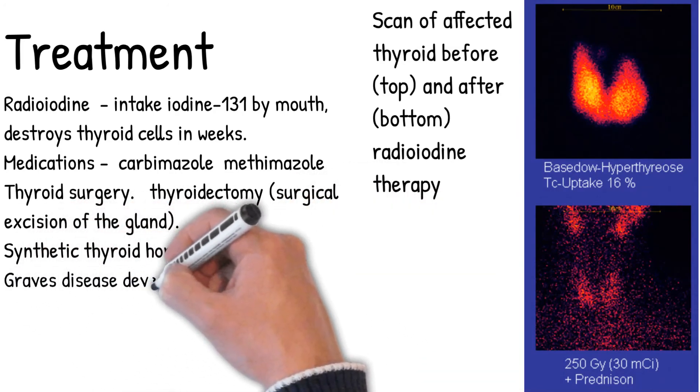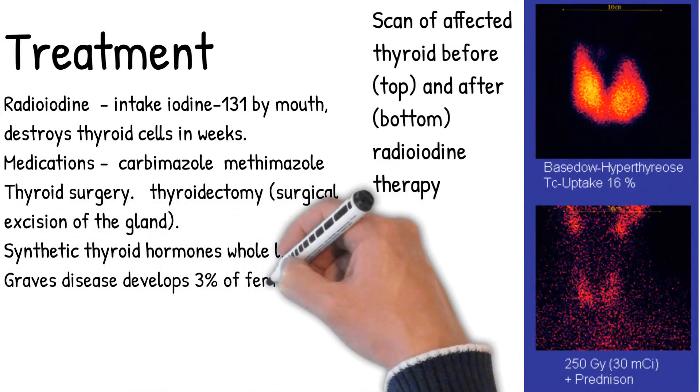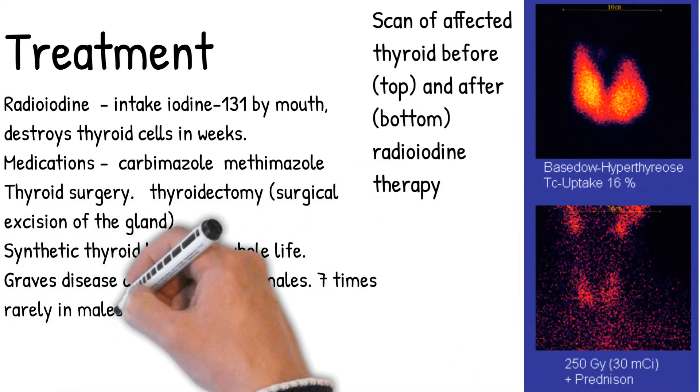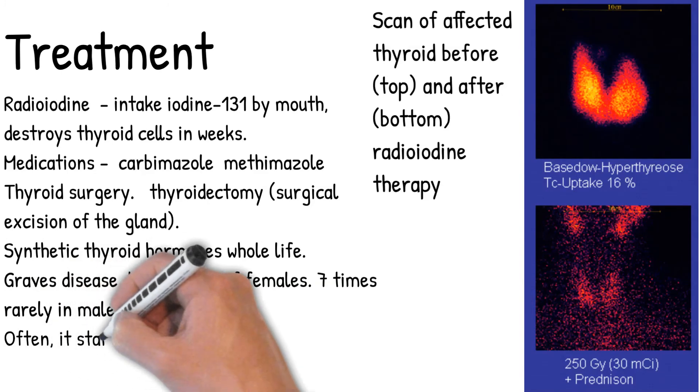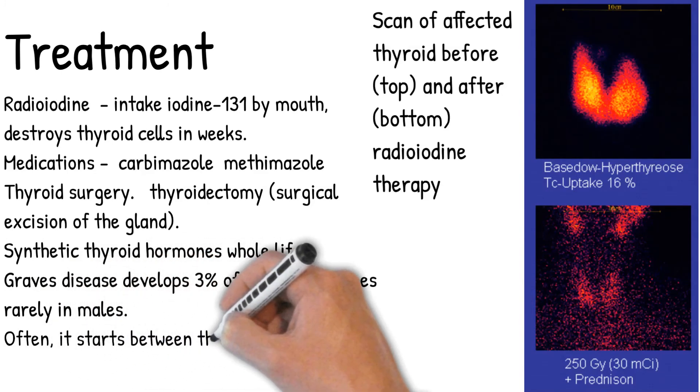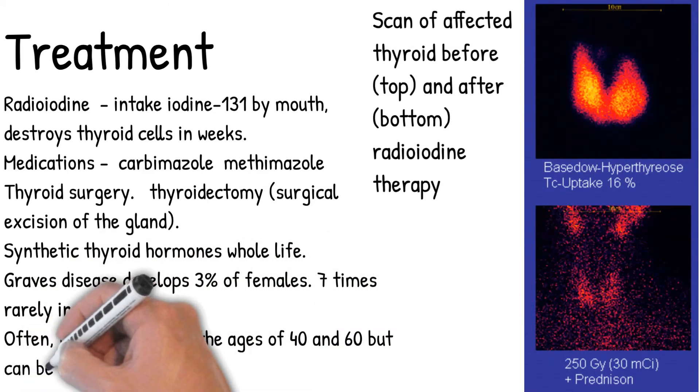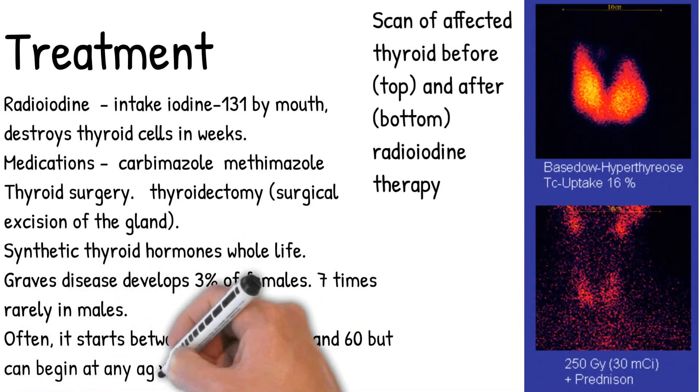Graves' disease develops in 3% of females and is 7 times rarer in males. Often it starts between the ages of 40 and 60, but can begin at any age.